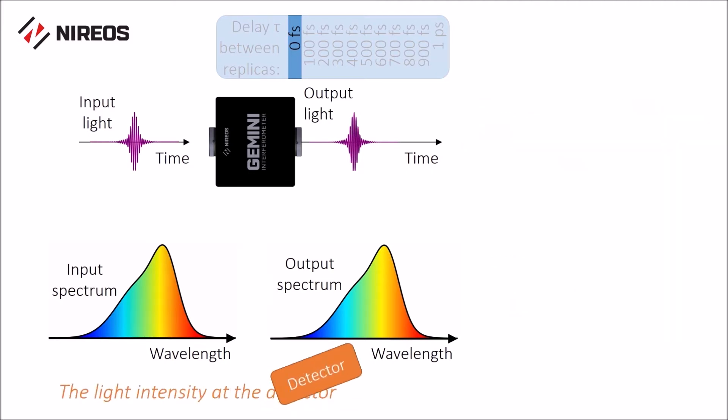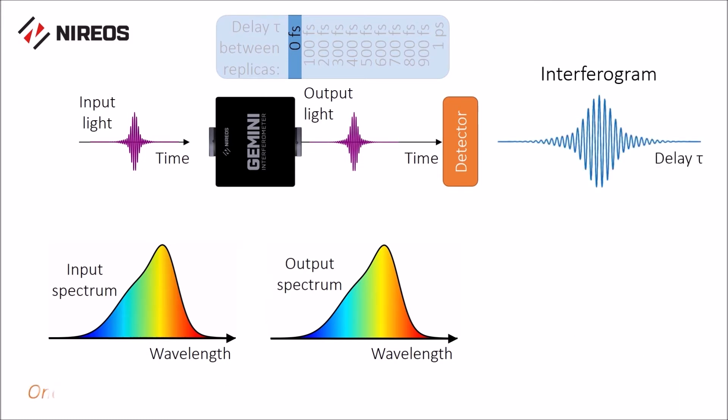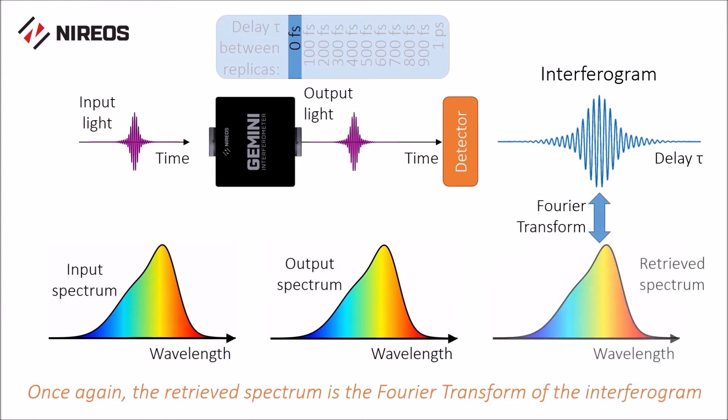The light intensity at the detector as a function of the delay is called interferogram. Its Fourier transformation provides the spectrum of the input light.